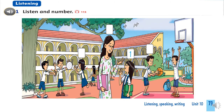Here we go. Number 2: Can you see the teacher with curly hair? It's Miss G. Number 3: This friend is a boy. He has short hair. It's Sean. Number 4: This girl has short hair. It's me.